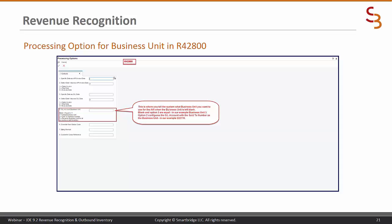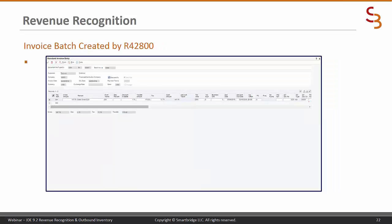Here are the processing options for R42800, the sales order update. Option number five on the defaults tab is where you tell the system what general ledger business unit to use to build the account number to record the revenue recognition entries. Blank and option number three are the same — it will use the revenue business unit for the transactions being created. Option number one uses the business unit in the detail transaction line, and option number two uses the address book number as the business unit number.